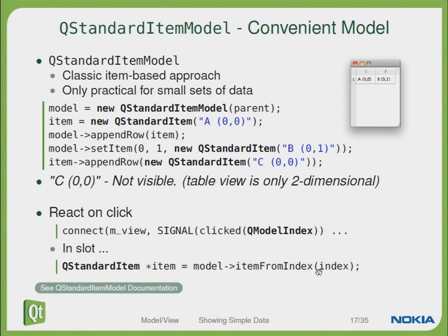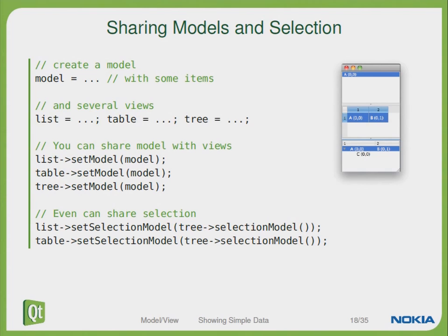Further information is available in the QStandardItemModel documentation. How can we share the selection among the models? We first create a model and then we create several views based on the same model — for instance a list, a table, and a tree showing the same data. We can share the selection by setting the same selection model to the list and the table, so all three views will use the selection model of the tree.